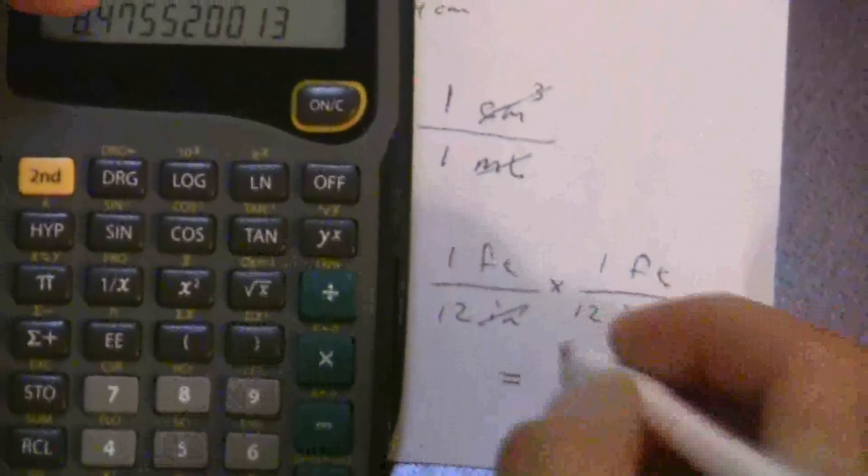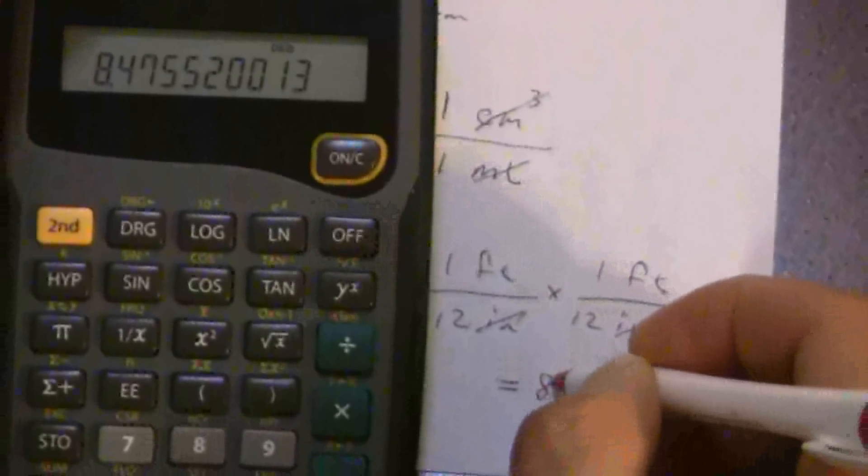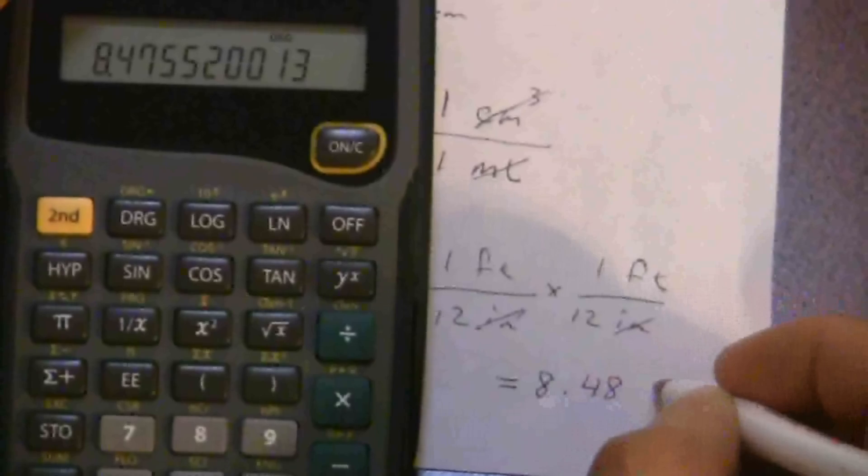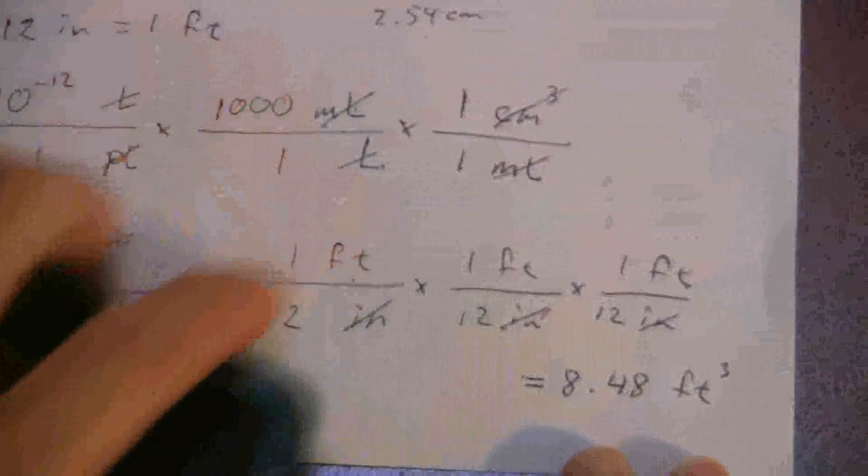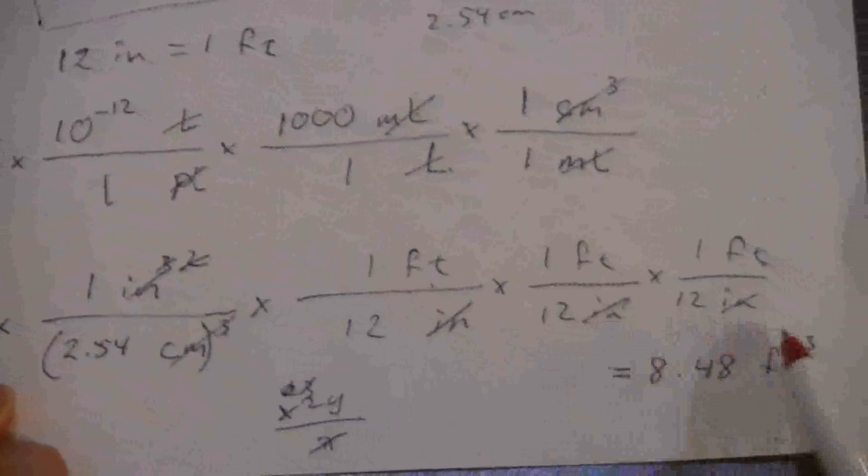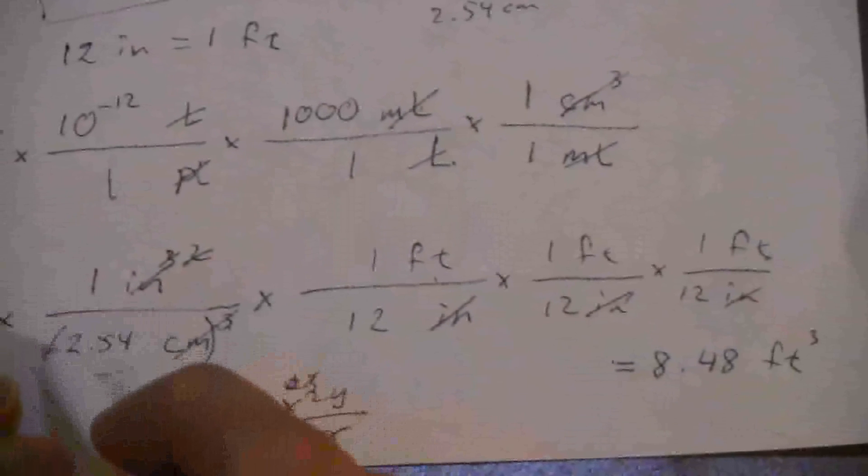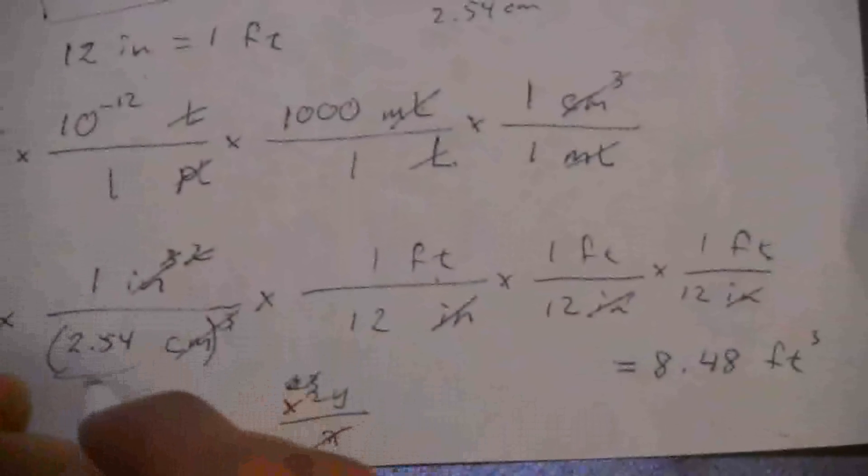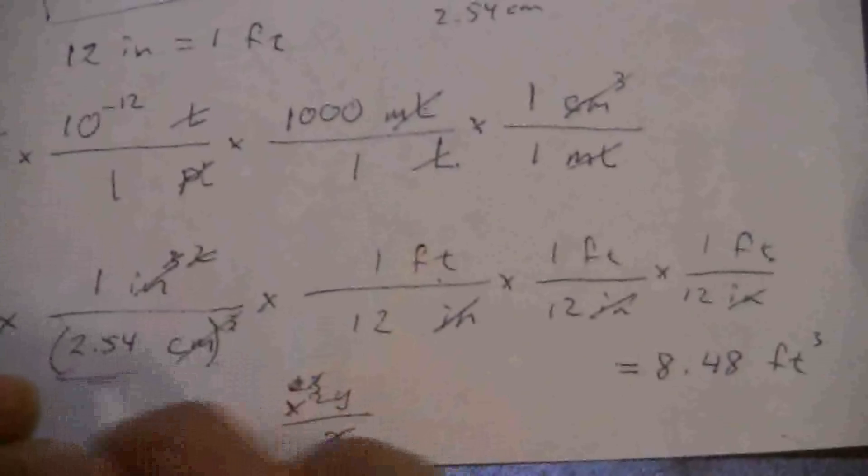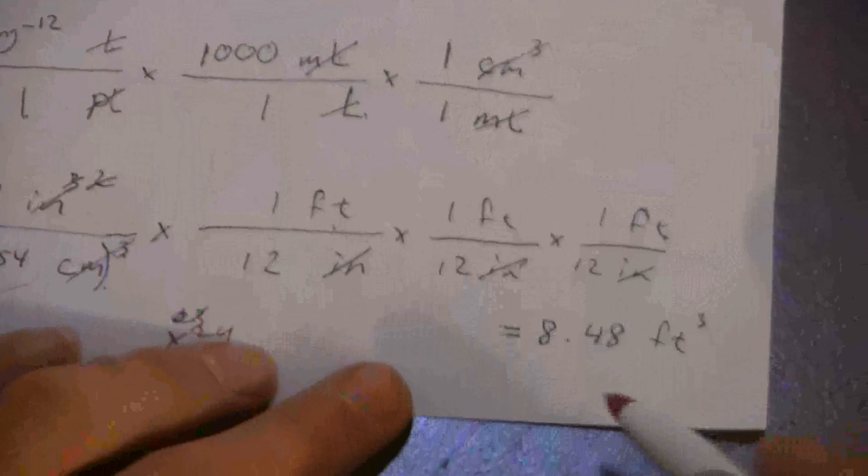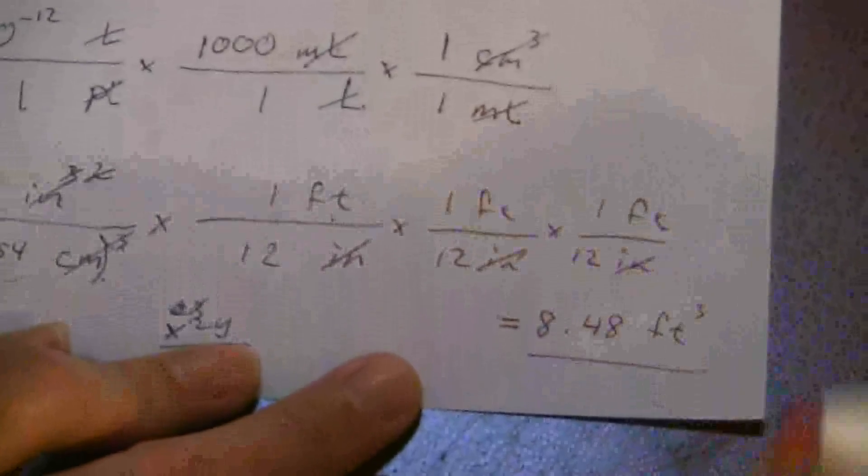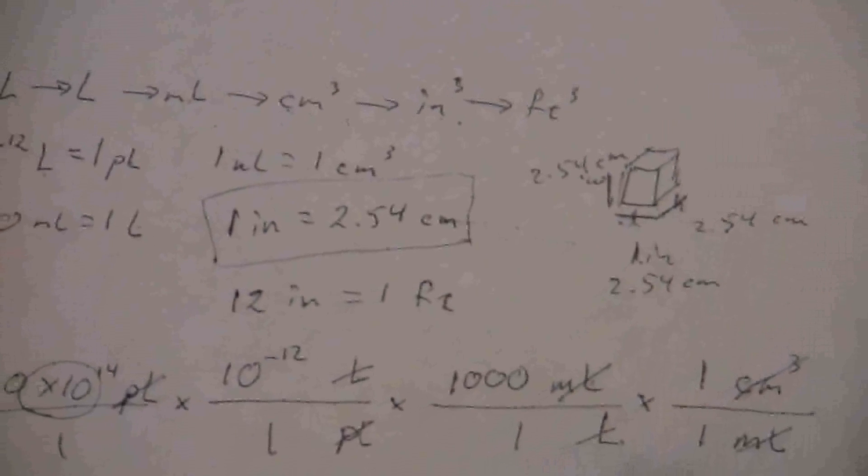So in the end, 2.40 times 10 to the 14th picoliters is equal to 8.48 cubic feet. You want to make sure our significant figures are okay. I have three to begin with here. These are all exact conversions, including this one. It doesn't maybe look like that, and you'd think that should be three significant figures. In fact, that's also an exact definition. The English system is based on the metric system through this relationship. So that is an exact definition. But either way, we have three significant figures there, so that would be the result. So hopefully that has clarified how we go about doing that sort of thing.